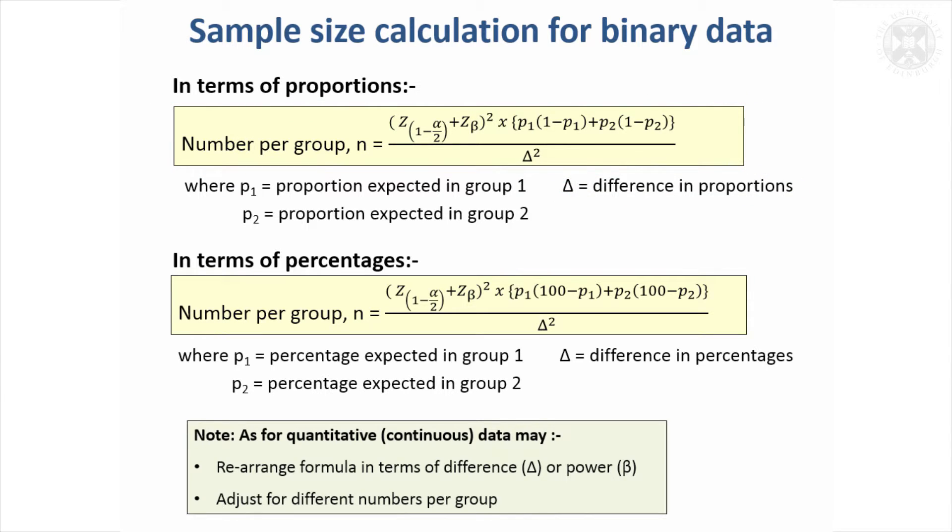So that's in terms of proportions. Sometimes it's easier to do it in terms of percentages, and it's very easy to adapt for that. Instead of the one coming in here, we have a hundred, and these p's are in terms of percentages, and so is the delta.